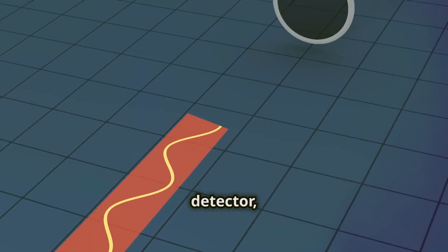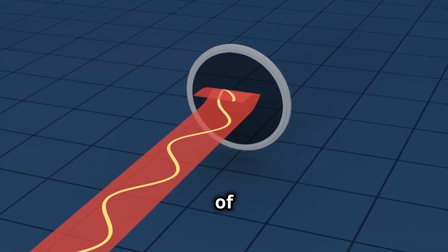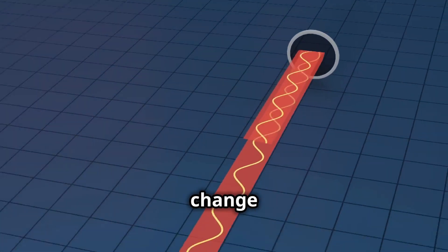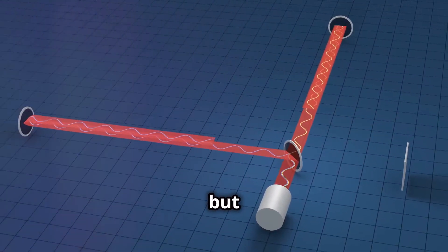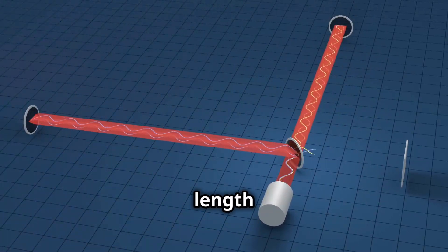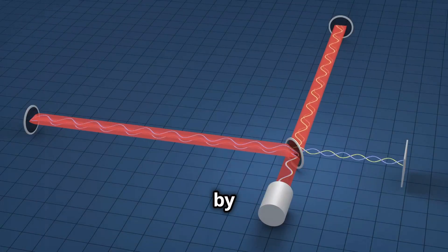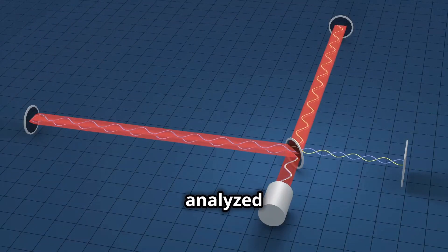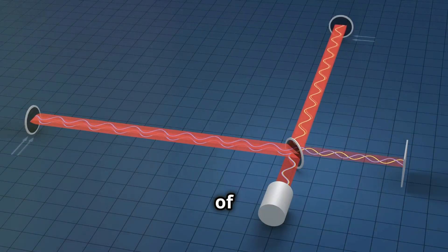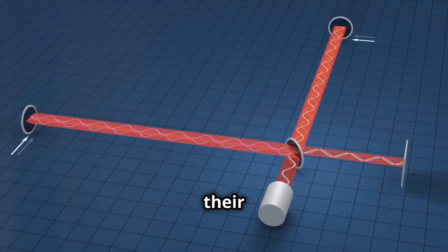When a gravitational wave passes through the detector, it slightly changes the length of one arm relative to the other, a change that is incredibly small but detectable. This difference in length causes a tiny shift in the laser light pattern, which is detected by sensitive instruments. These shifts are then analyzed to confirm the presence of gravitational waves and to study their properties.